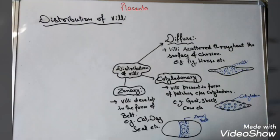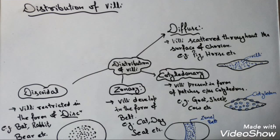The third type is zonary type of placenta, where the villi are arranged in the form of a belt. Such type of placenta is found commonly in cat, dog, and seal. Another type is discoidal type of placenta, where the villi are restricted in the form of a disc — that is why it is called discoidal. Examples include bat, rabbit, and bear.